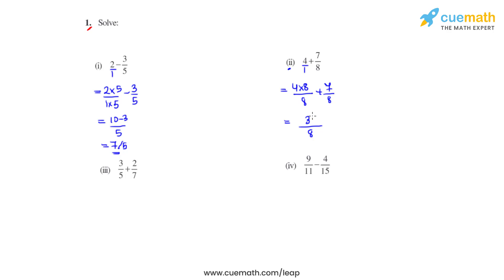So 39 over 8 is the improper fraction we have got as the answer. If we convert this into a mixed fraction, our answer will be 4 and 7 eighths.